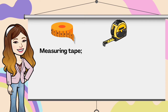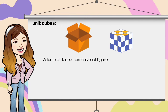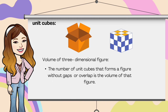Next is the measuring tape. Measuring tapes are used to measure length in meters and centimeters. It is a common measuring tool used by carpenters. It contains a flat ribbon of cloth, plastic, fiber, or glass, and its design allows measurement of great lengths. We also have unit cubes. We use unit cubes for the volume of a three-dimensional figure. The number of unit cubes that forms a figure without gaps or overlaps is the volume of that figure.